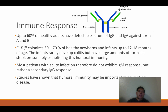Regarding the immune response: C. diff colonizes about 60 to 70 percent of healthy newborns and infants up to 12 to 18 months. They rarely develop colitis but have a large amount of toxins in the stool, which is presumed to be establishing humoral immunity. Most patients with acute infection do not exhibit an IgM response but rather exhibit a secondary IgG response, the most common antibody responding from humoral immunity.